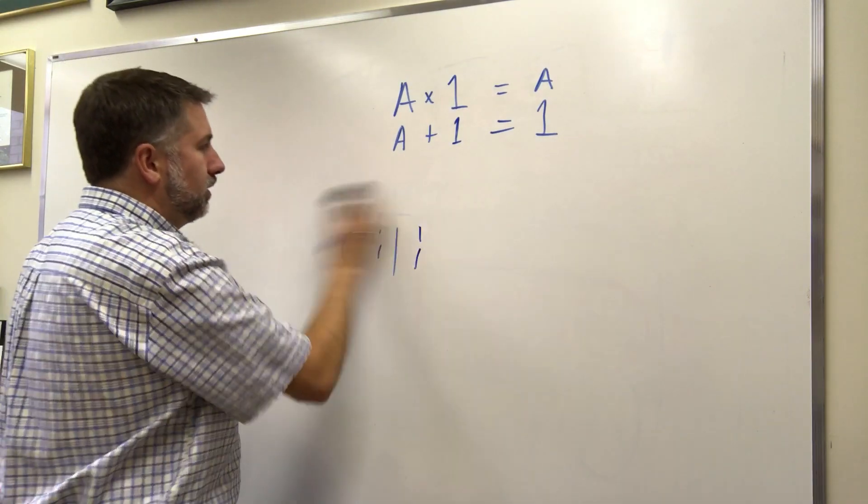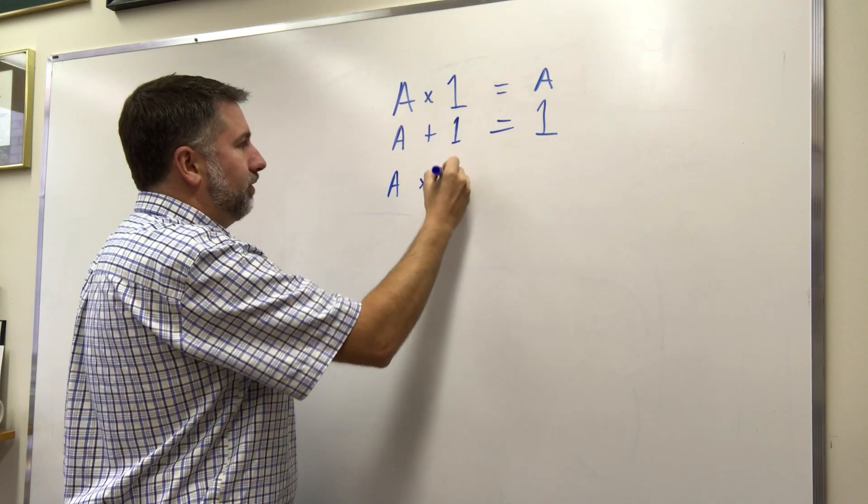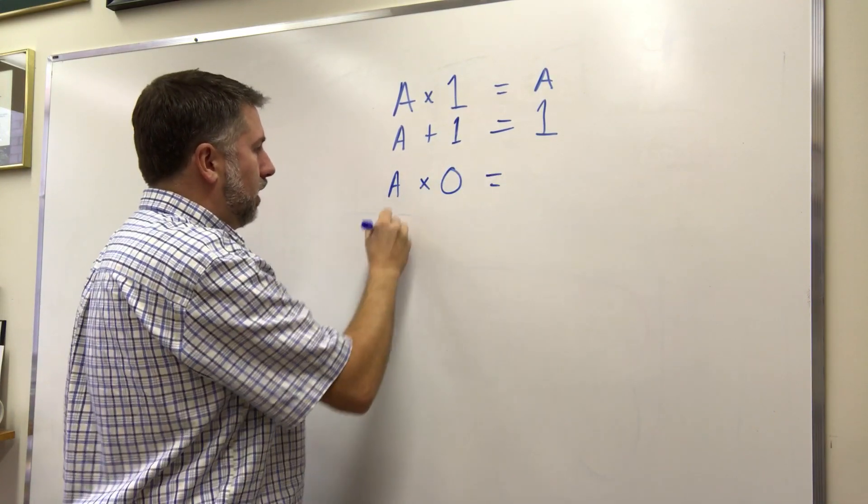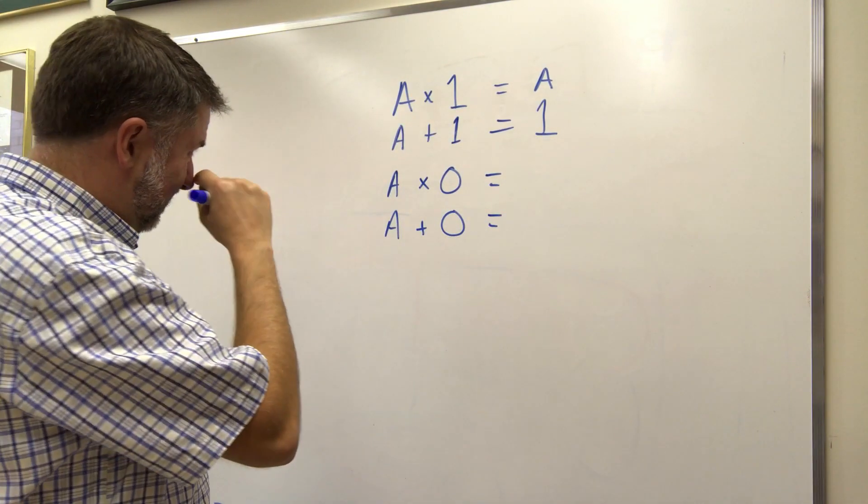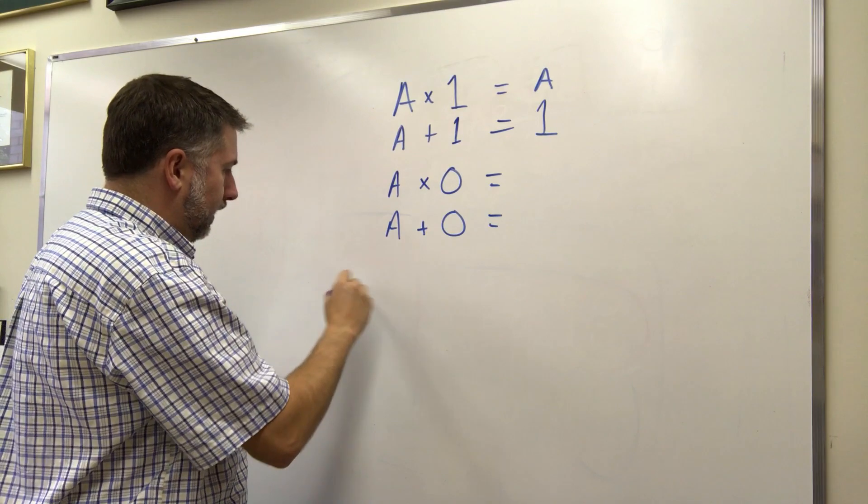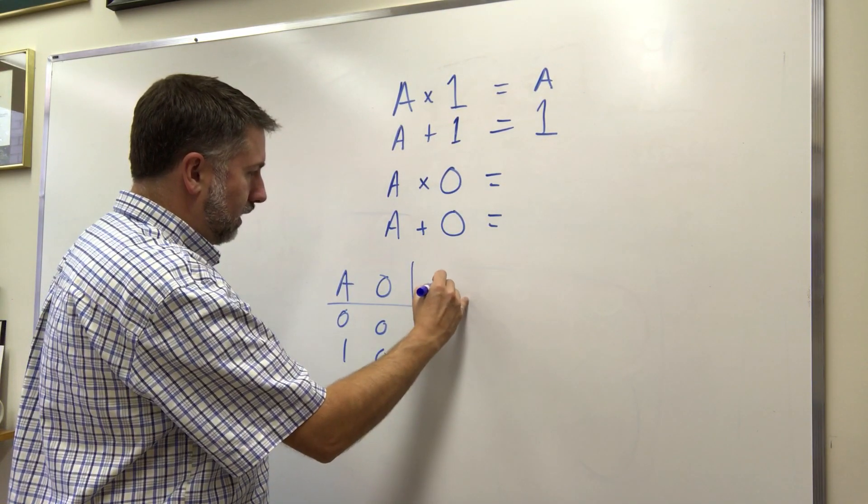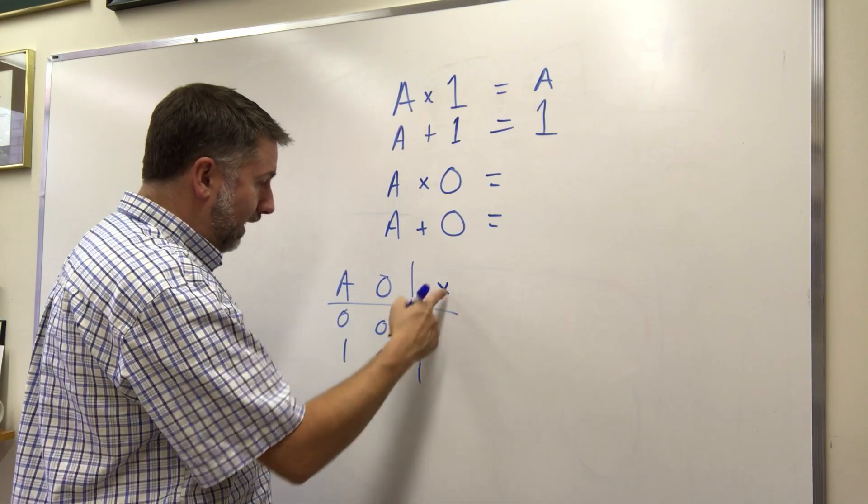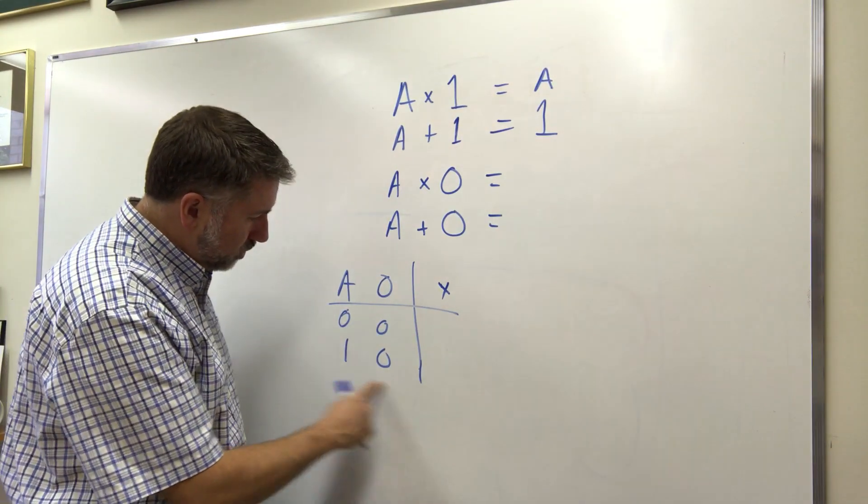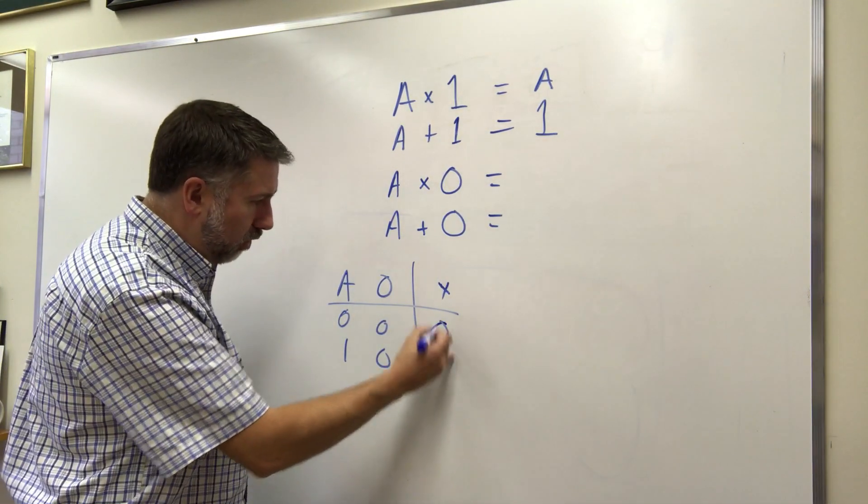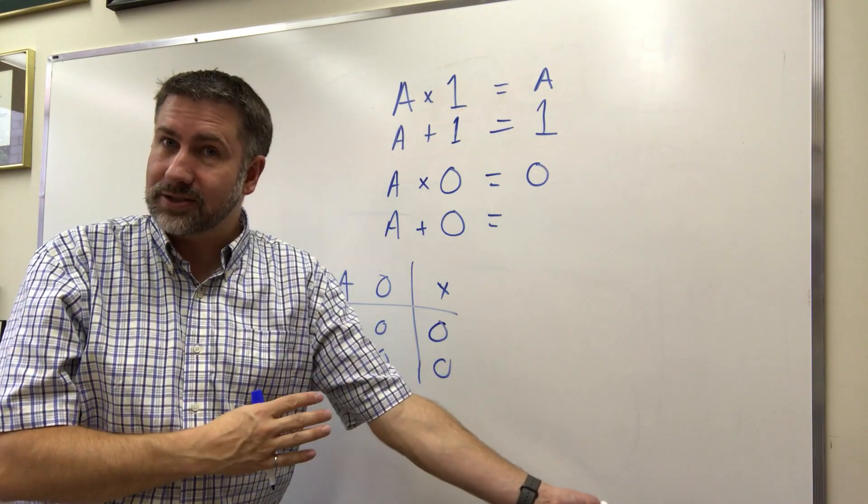What about zeros? What happens if we manipulate with zero? A AND zero, A OR zero. What are those? Again, A, zero, and our result. So if we AND, AND is true only when both are true. Well, there's no situation where both of these are true, so they're always false. So A AND zero is zero. That kind of makes sense. You multiply by zero, you get zero, right?